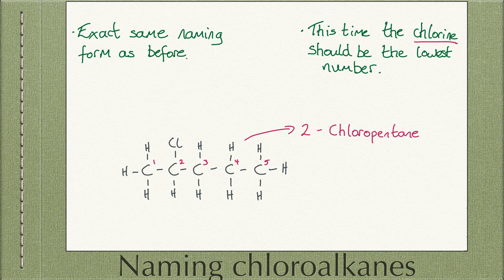Chloroalkanes follow the exact same naming system as before with the hydrocarbons. However, the chlorine atom present must now have the lowest number possible for the alkane.